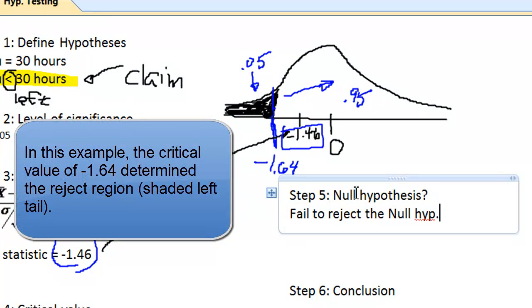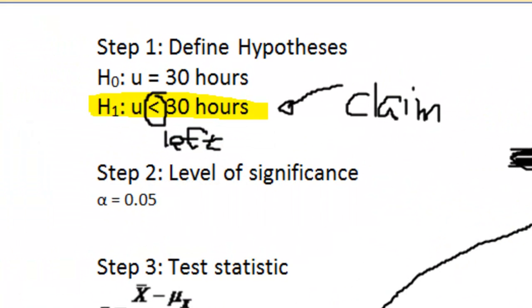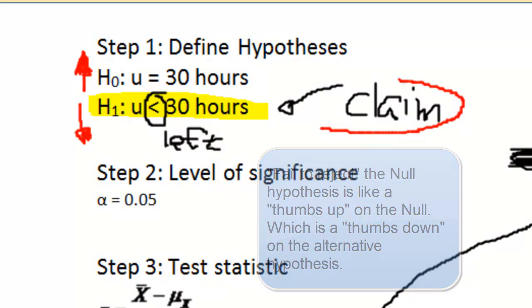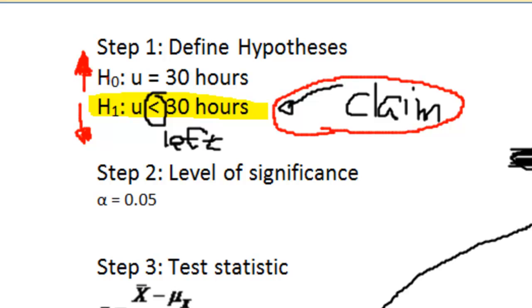So we're not in the reject region. I'm failing to reject. And what I like to do sometimes here is, I like to sometimes say, if I'm failing to reject the null, then going back over here to step one, I like to sometimes put an arrow going up, almost like a thumbs up on the null, saying, look, I'm not rejecting you. And in essence, I'm rejecting the alternative. It's like a thumbs down on the alternative, which means I just rejected the claim, the claim was the alternative. If I am failing to reject the null, then I am rejecting the alternative. I don't have enough evidence to support the claim. In this particular case, that's where the claim is, it's in the alternative.